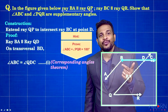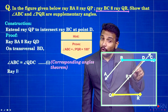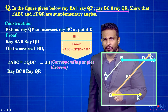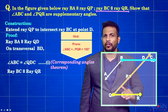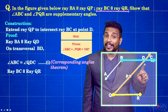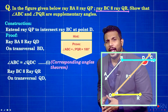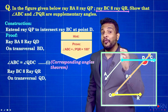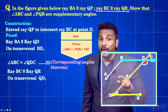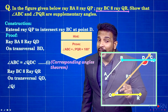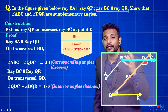Now let's use the second pair of parallel lines: BC and QR are parallel. For these two parallel lines, QD is the transversal. Look at angle QDC and angle DQR — these are a pair of co-interior angles. When lines are parallel, co-interior angles are supplementary. So we write: measure of angle QDC plus measure of angle DQR is equal to 180 degrees. The reason is the Interior Angles Theorem.